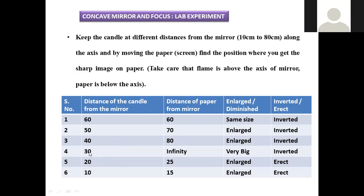When the candle distance is 30 cm, the paper is at an infinite distance which cannot be measured — the image is observed in a very big, hugely large manner, and it is again inverted. When the distance is shifted to 20 cm, with paper at 25 cm, a larger type of image can be observed and it is erect — meaning it is upright in nature.